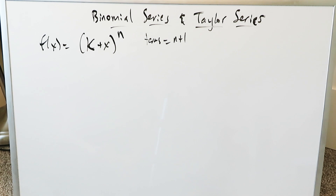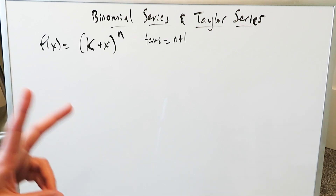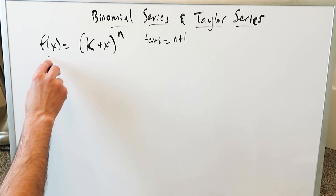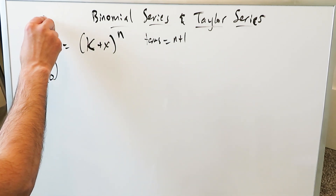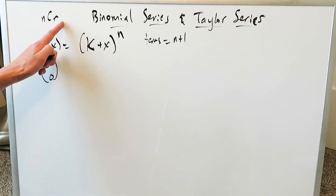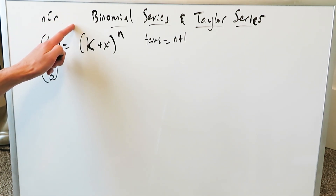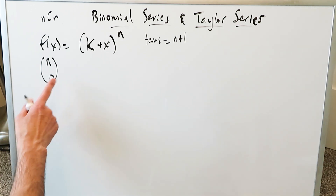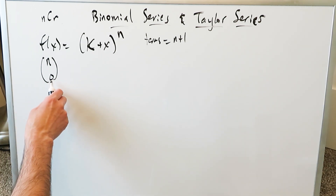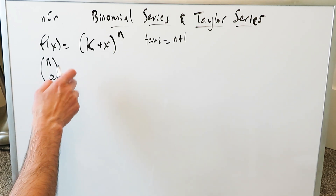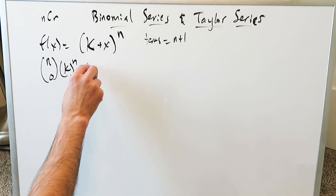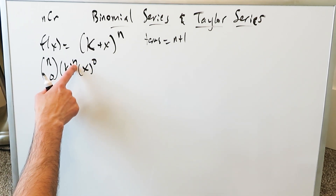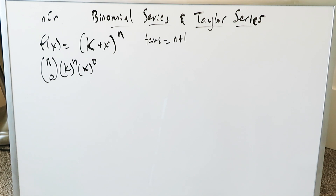Both results must be the same. When you expand this out, you bring in the combinatorial coefficients — something like nCr, which is n factorial divided by r factorial times (n − r) factorial. The first term has k to the power of n and x to the power of 0. As you expand, the power of x increases by 1 and the power of k decreases by 1.